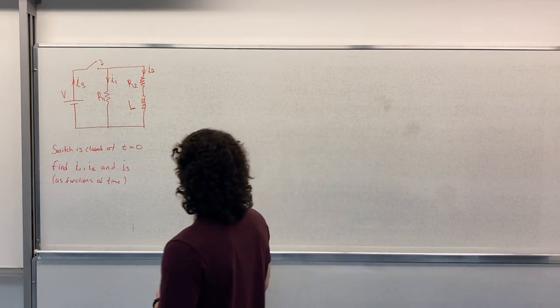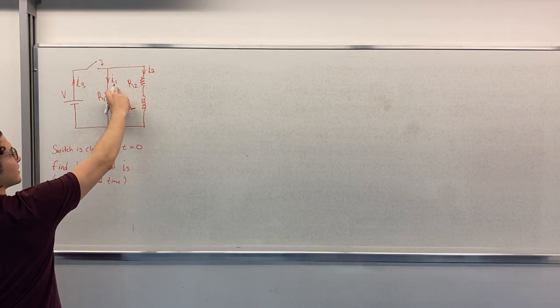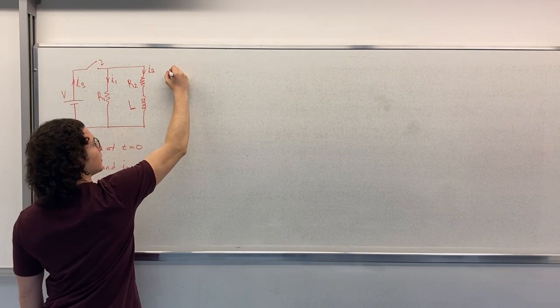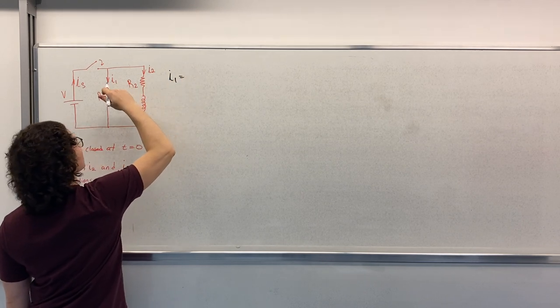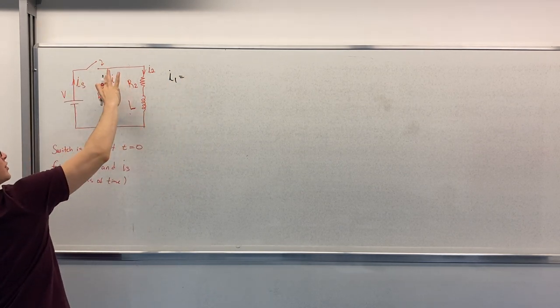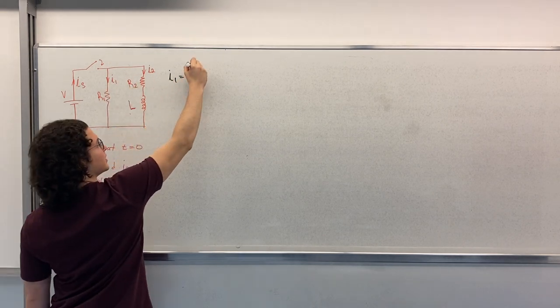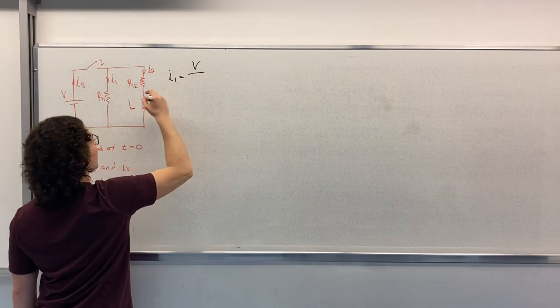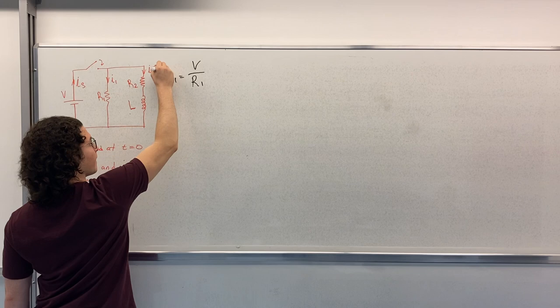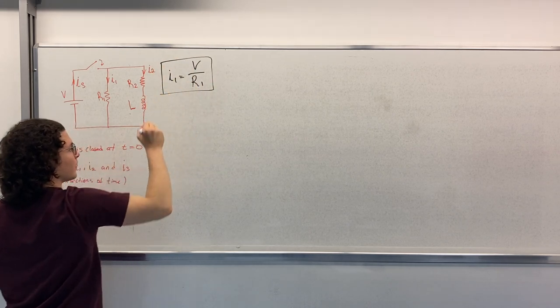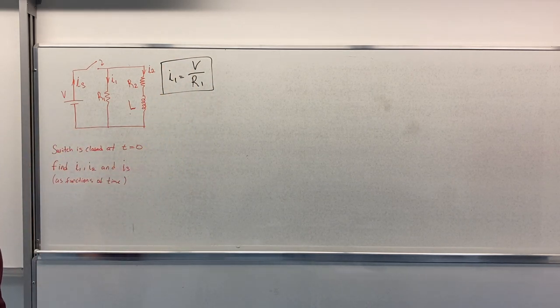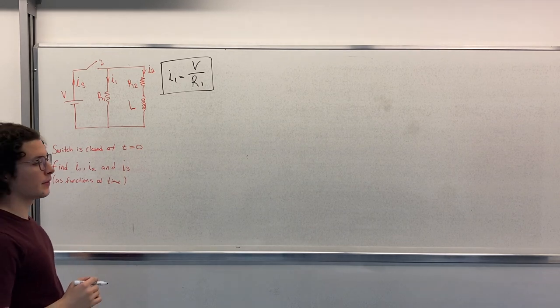First, we can easily find I1. I1 is equal to this voltage across this resistor, which is V over R1. So this is our first answer.